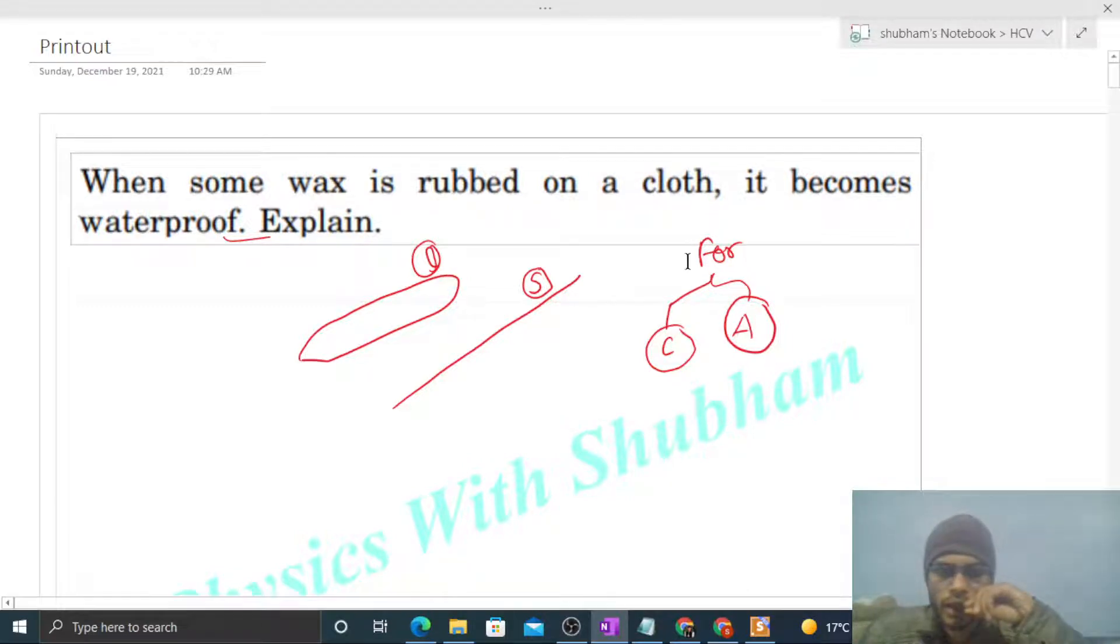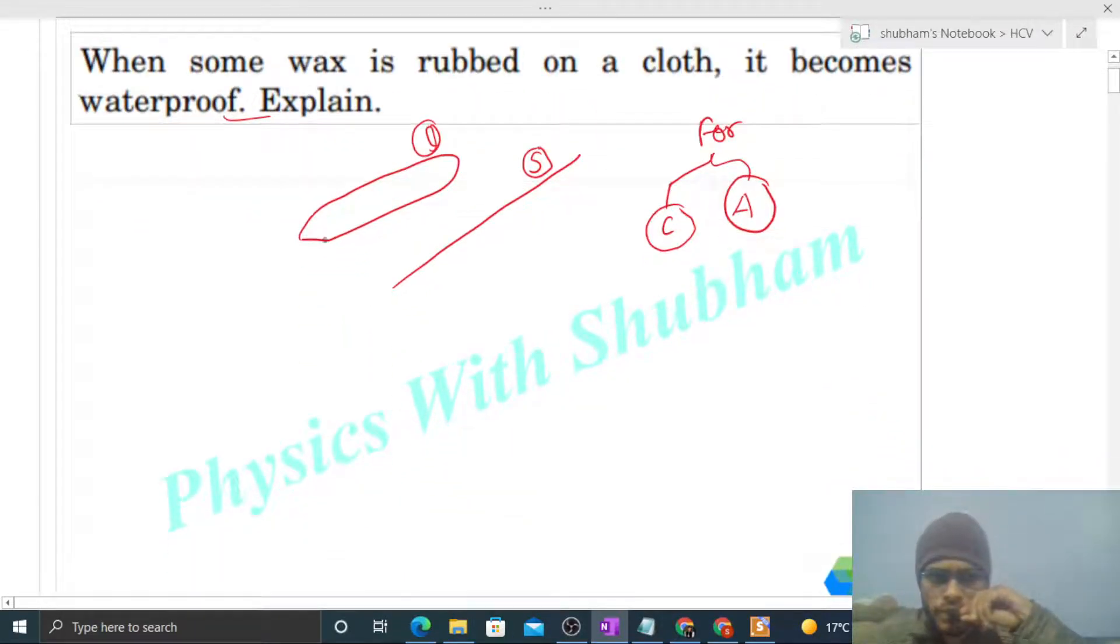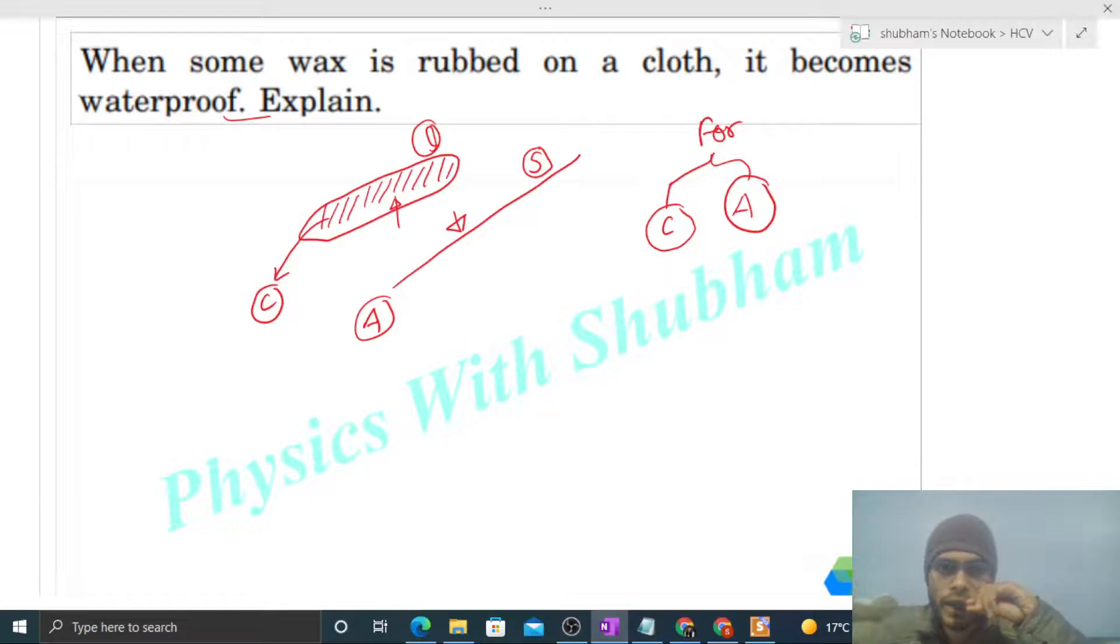Now, between the molecules of liquid there will be a cohesive force, right? And there will be an adhesive force between the molecules of this liquid and the molecules of this surface. So cohesive force is the force of attraction between the molecules of liquid itself, and adhesive force is the force of attraction between the molecules of liquid and the molecules of surface.